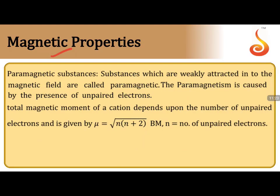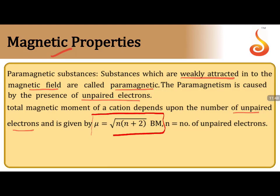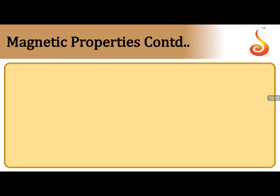Magnetic properties are classified into three types: paramagnetic, diamagnetic, and ferromagnetic. Paramagnetic substances are weakly attracted in a magnetic field due to the presence of unpaired electrons. The total magnetic moment depends on the number of unpaired electrons and is calculated by the formula: μ = √(n(n+2)) Bohr magnetons, where n is the number of unpaired electrons.